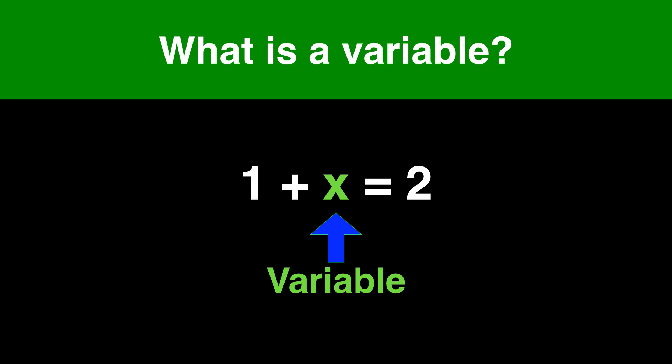So let's start with: what is a variable? We've already seen variables, although we weren't calling them by that name. When we define primitive values, we always use the pattern type, name, and value. The name is a variable in Java. Just like in algebra, the variable is a placeholder for the value.